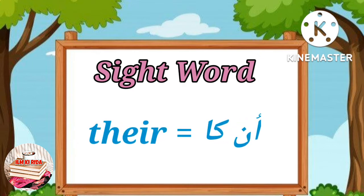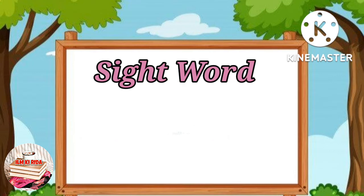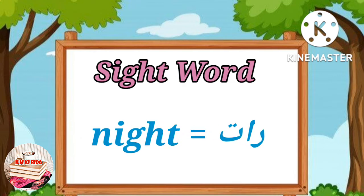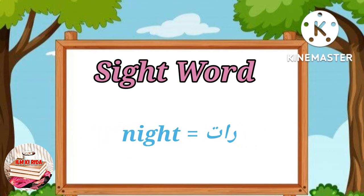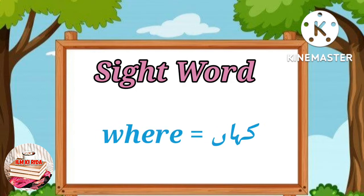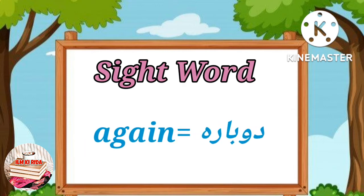There - Meaning: उनका. Night - Meaning: रात. Again - Meaning: दोबारा.